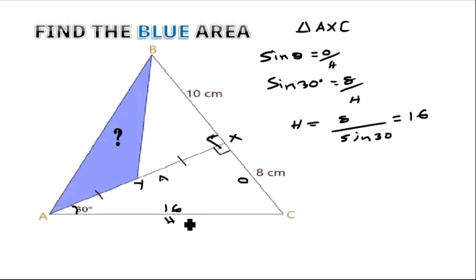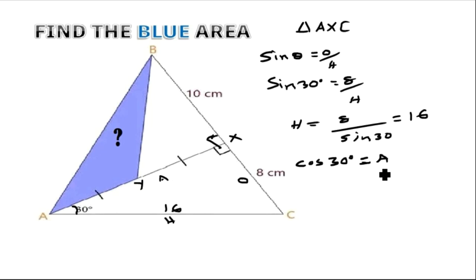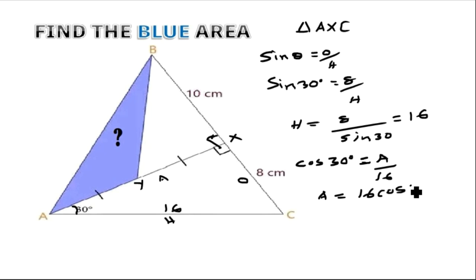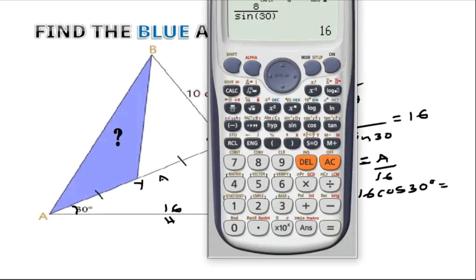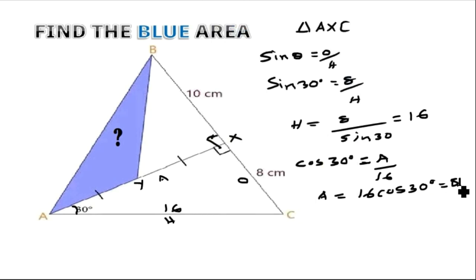Now for AX, we use the cosine ratio. Cosine equals adjacent over hypotenuse, and the hypotenuse AC we found is 16. So cos 30° = AX / 16. Multiplying both sides by 16 gives AX = 16 cos 30°. Since cos 30° = √3/2, we get 16 × (√3/2) = 8√3. So AX = 8√3.